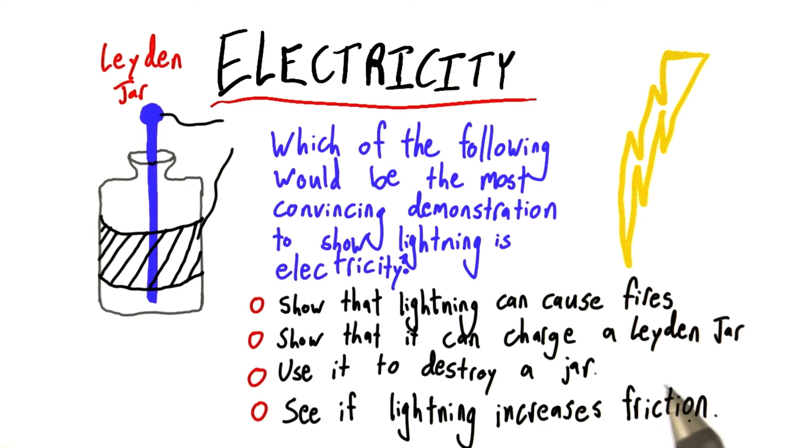Which of these four options should Benjamin Franklin do if he wants to convincingly prove that lightning is electricity?